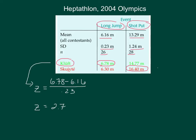Now let's do something similar for Skoyete. Her actual score on the shot put was 16.4. The average, or the mean for the shot put, was only 13.29. And the standard deviation for that event was 1.24. When you calculate that on your calculator, you get a z-score of 2.5.